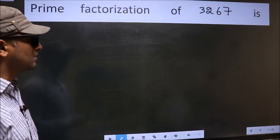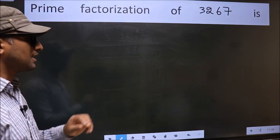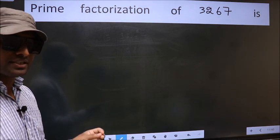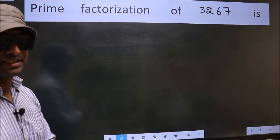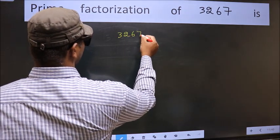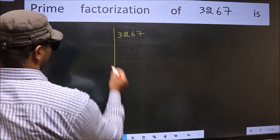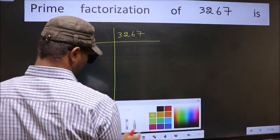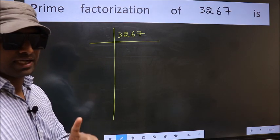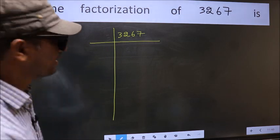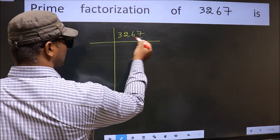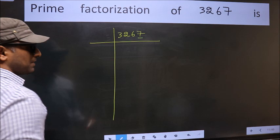Prime factorization of 3267. To do prime factorization, first we should frame it in this way: 3267. This is step 1. In this number, the last digit is 7, which is not even. So this number is not divisible by 2.